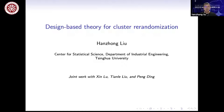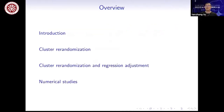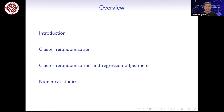This is joint work with Xin Lu at Tsinghua University, Tianle Liu at Harvard University, and Peng Ding from UC Berkeley. I will first introduce cluster randomized experiments and then describe several cluster re-randomization schemes and study their design-based properties. Next I will discuss the combination of re-randomization and regression adjustment to further improve efficiency, and finally show some simulation results and conclusions.